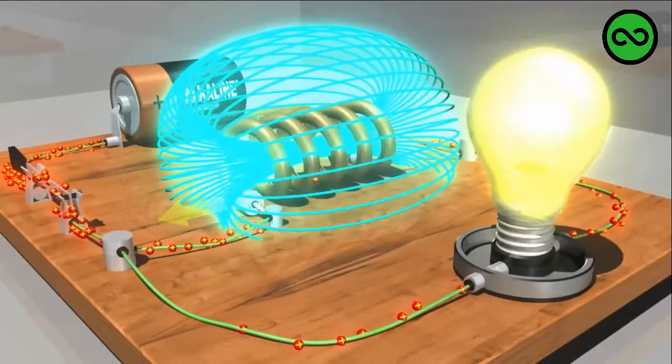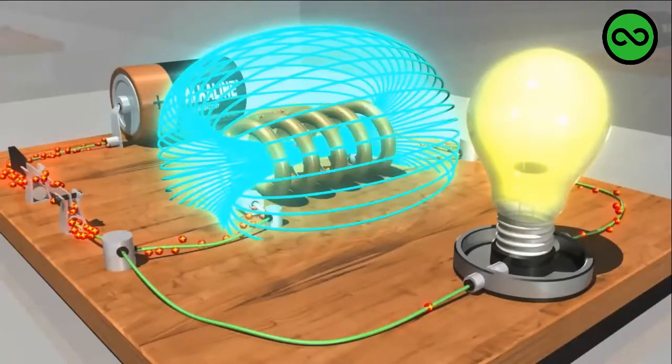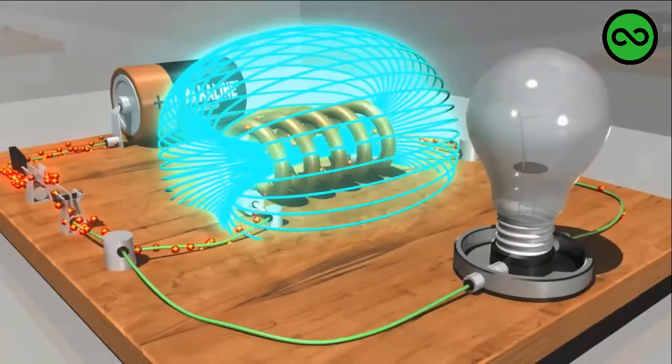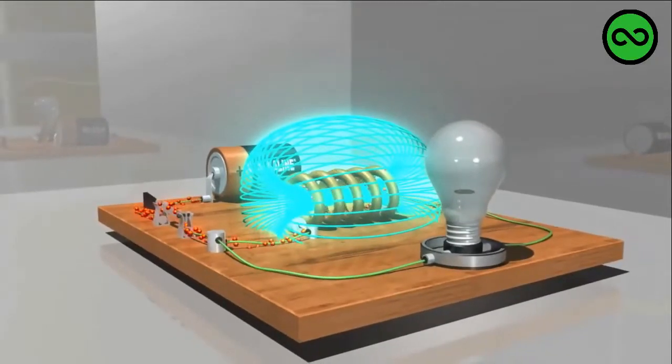Once the magnetic field around the inductor reaches its maximum field, the back EMF fades and the current now favors the path through the inductor because the bulb creates some resistance to the current.